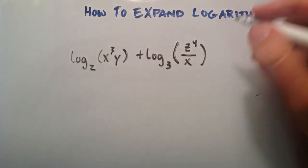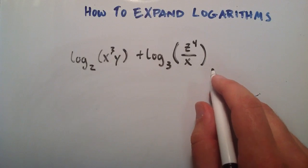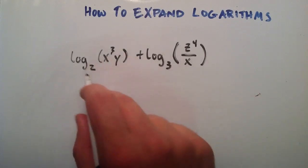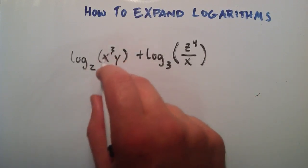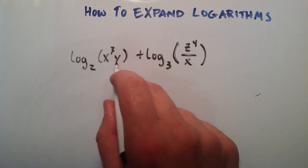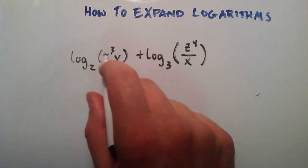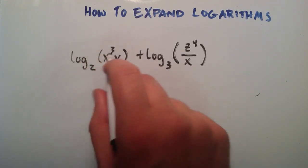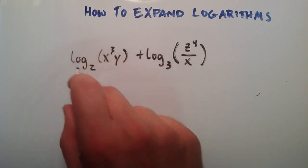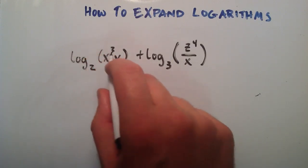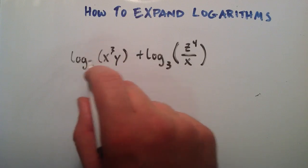And we're going to use properties of logarithms to expand this expression. So the first thing that we want to notice is we have a product inside this argument here. And we learned that you can expand the logarithm of a product so that it's equal to the logarithm of the first part plus the logarithm of the second part.